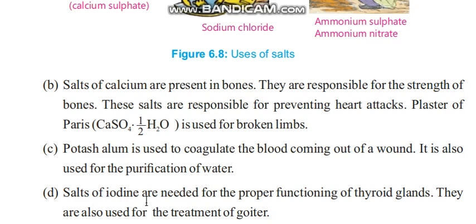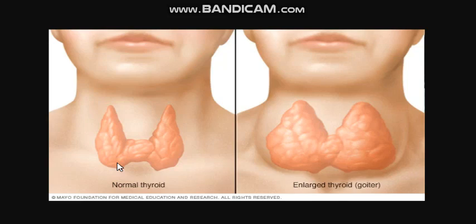The salts of iodine are needed for the proper functioning of the thyroid gland. They are also used for the treatment of goiter. The thyroid gland is present in our neck region. It releases hormones that are very important for our body. If we have a deficiency of iodine, the thyroid gland becomes enlarged, and this condition is called goiter.